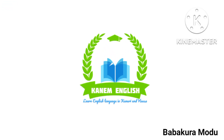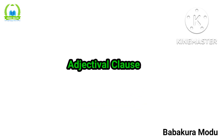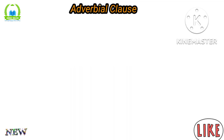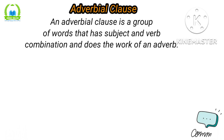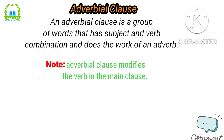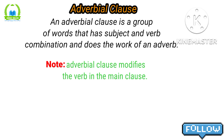Welcome to Karnam English, my name is Baba Kuromaru. In our previous class we learned the adjectival clause, and now we are going to look at the adverbial clause. An adverbial clause is a group of words that has a subject and verb combination and does the work of an adverb. The adverbial clause modifies the verb in the main clause by giving information about it.